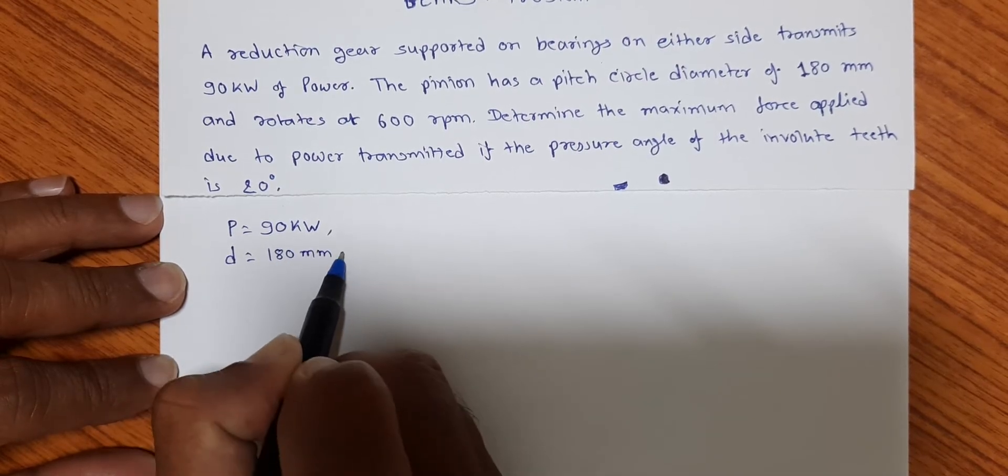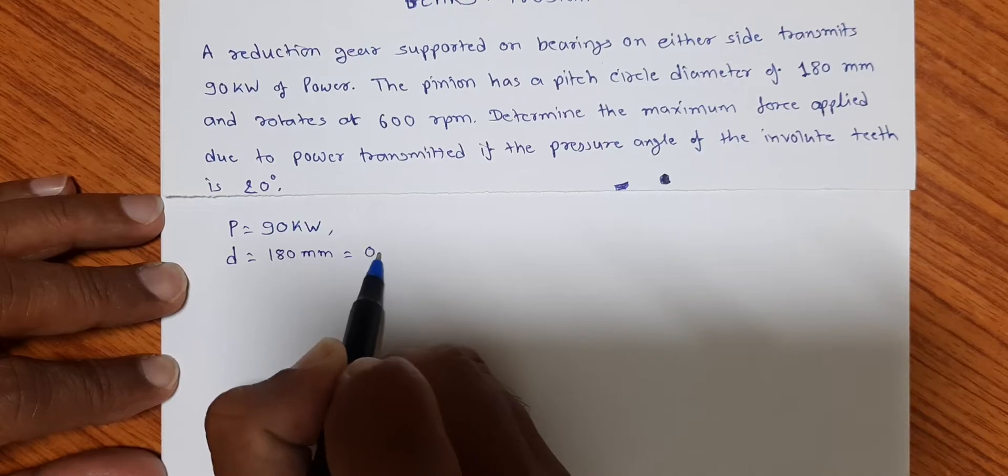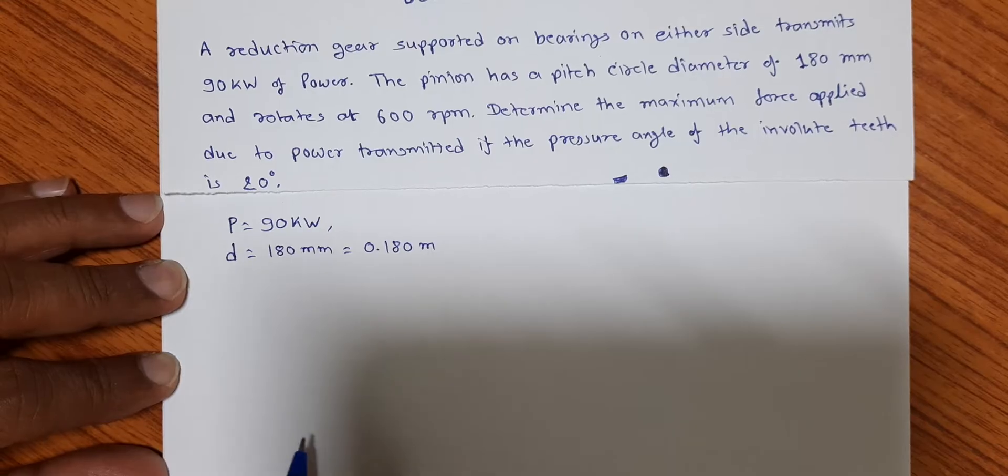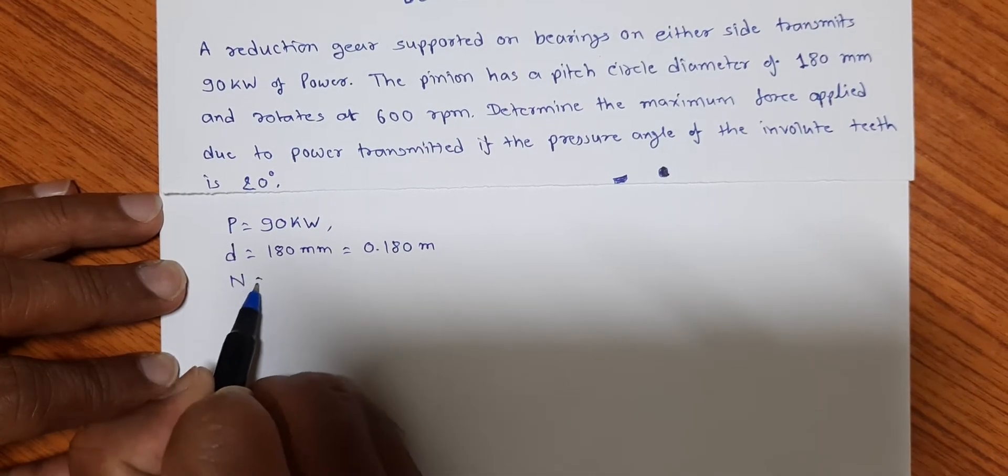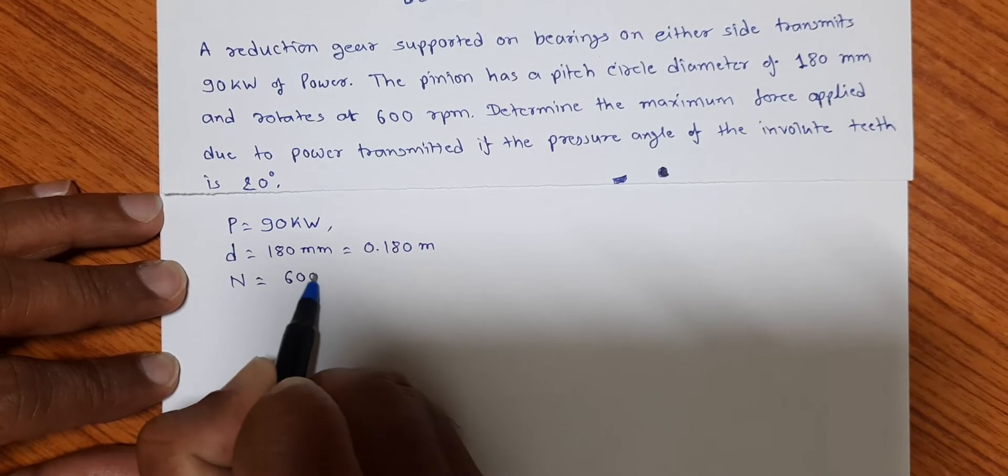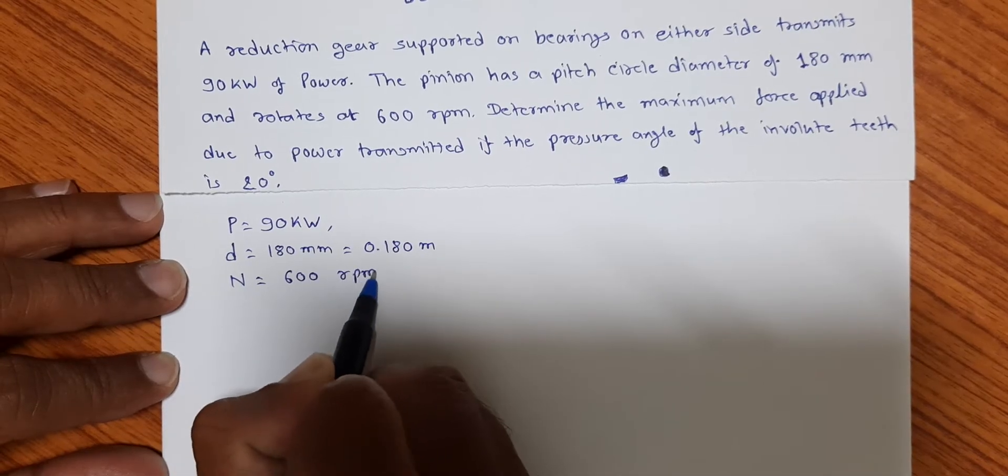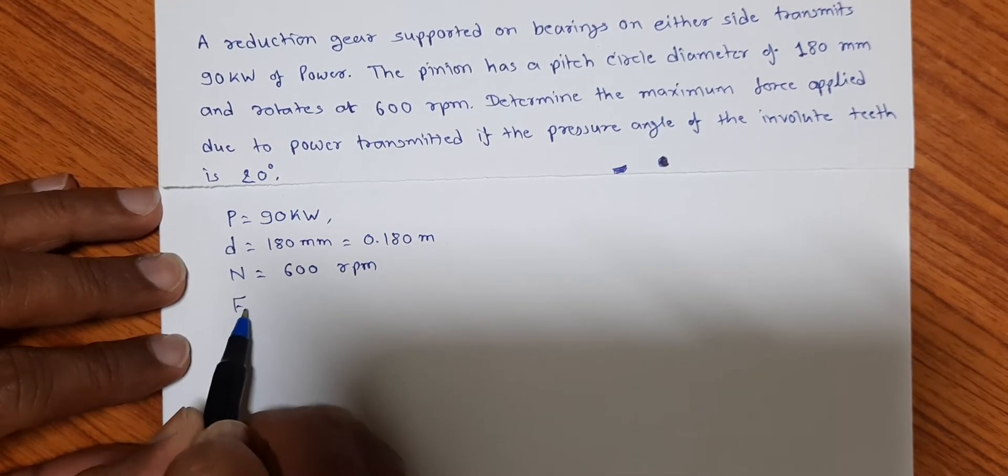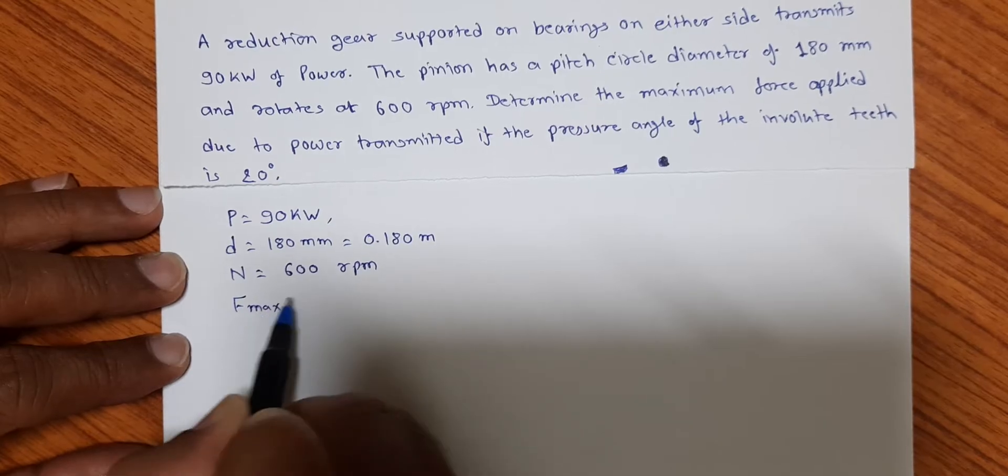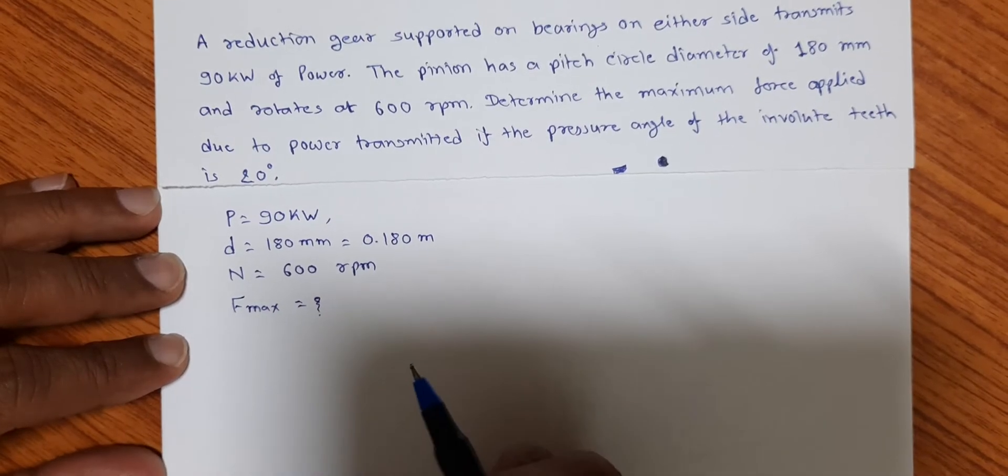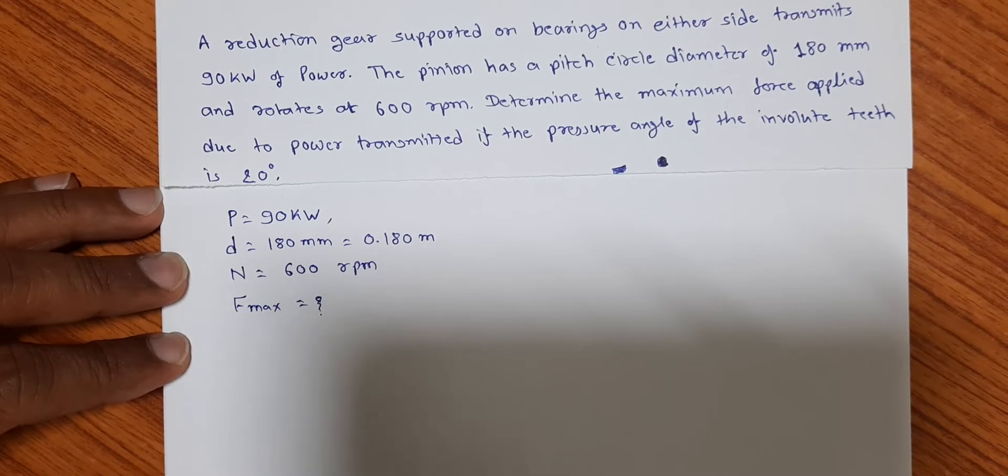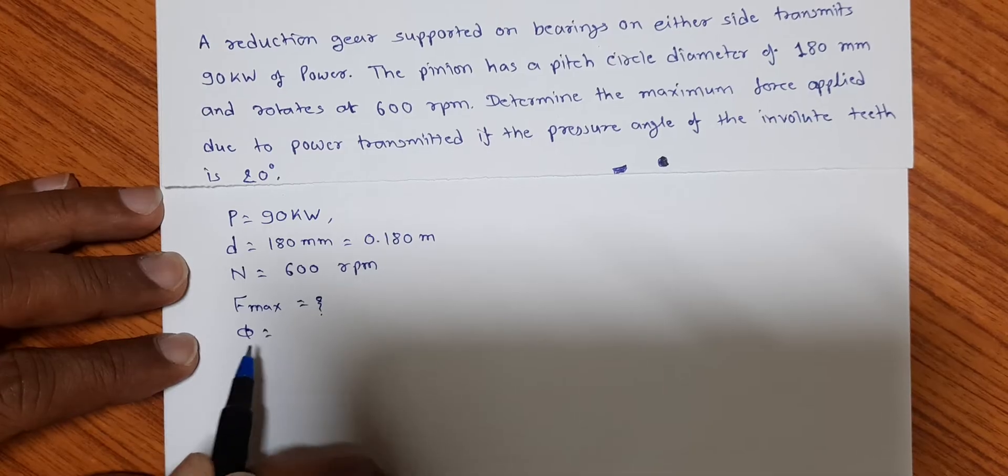Which rotates at 600 rpm, so N is equal to 600 rpm. We have to find out the maximum force applied because of power transmission. Let us say F_max is to be found out during power transmitted when the pressure angle of involute teeth is given.